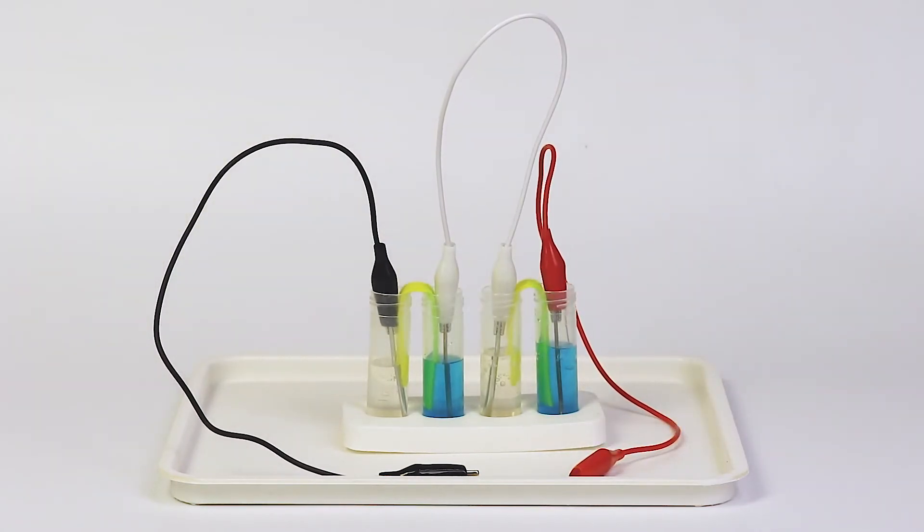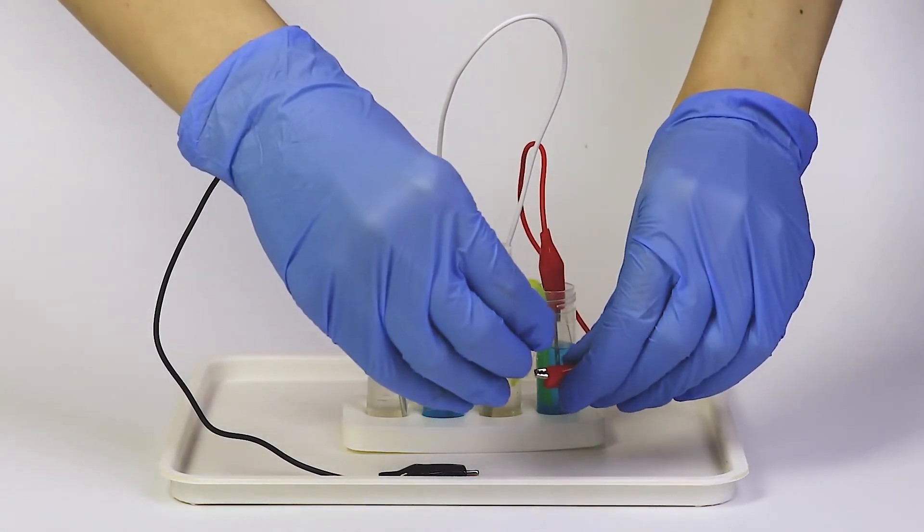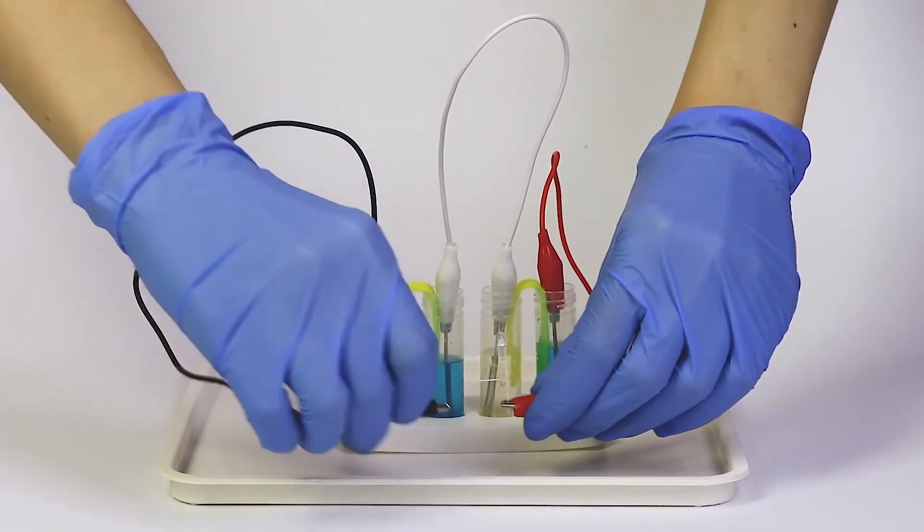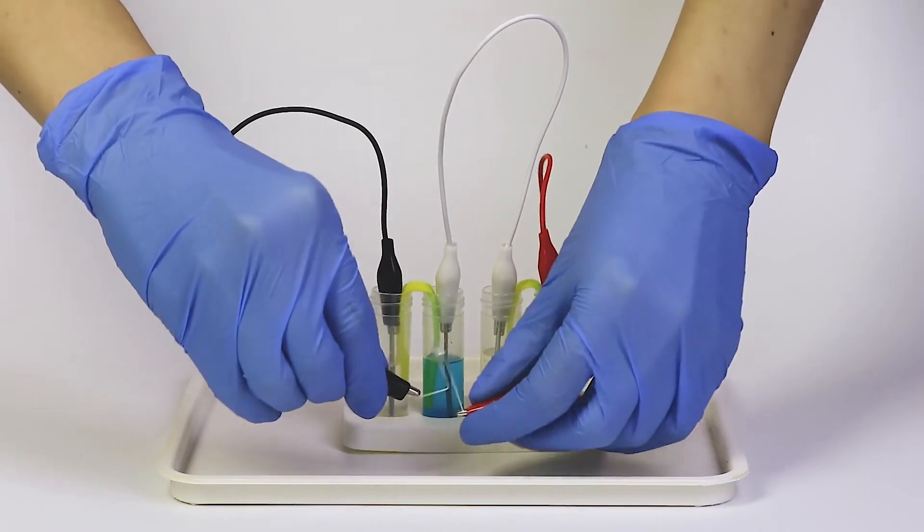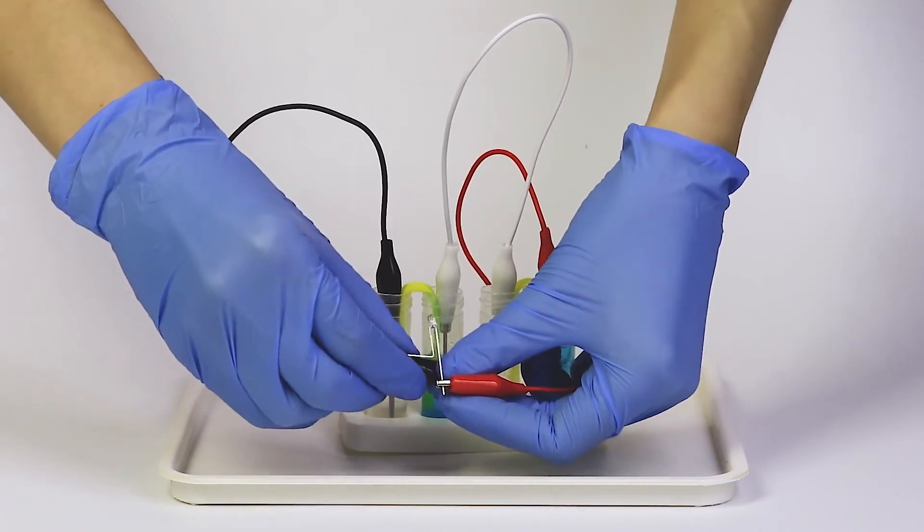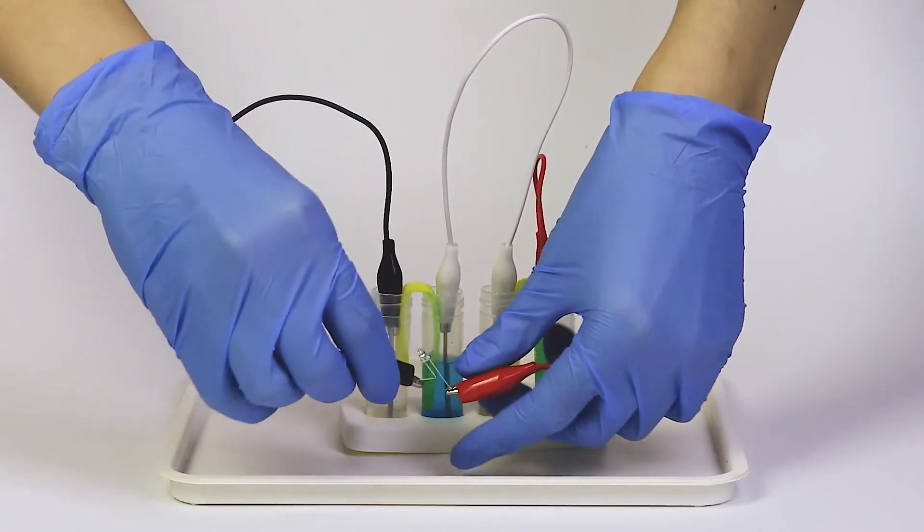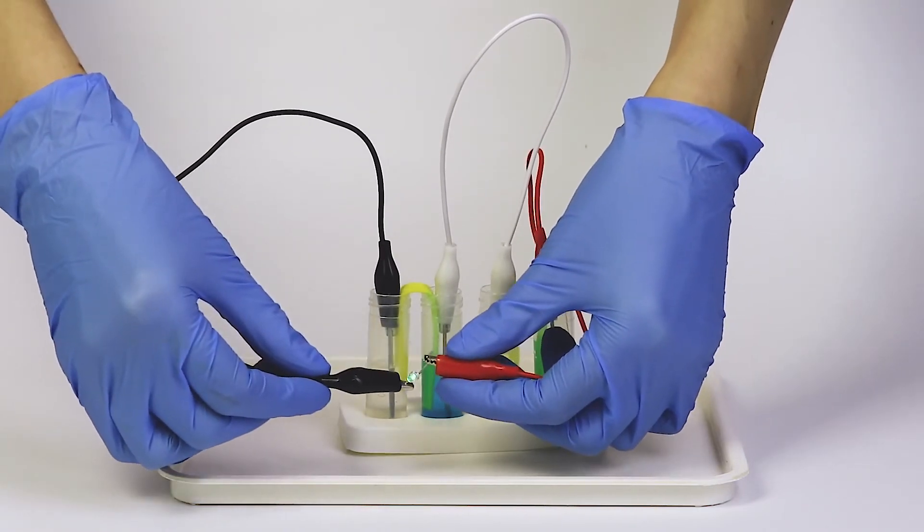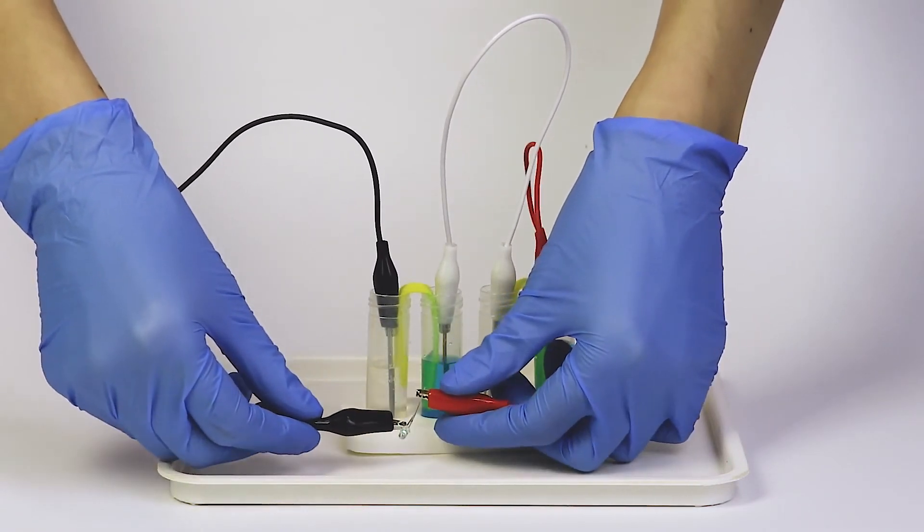Connect a free end of the red wire onto the long leg of the LED and the black wire onto the short one. The LED will light up, which means there is electrical current in the wires.